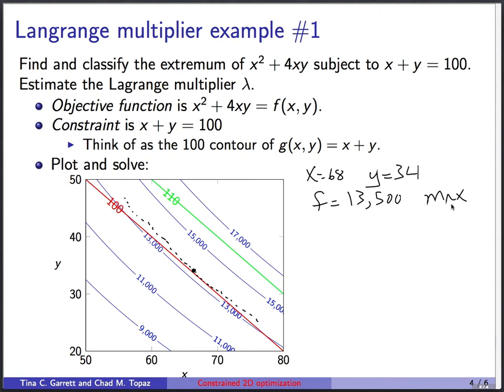For the second part, I want you to estimate the Lagrange multiplier. And we have to remember that the Lagrange multiplier means change in the optimum, optimum value, divided by change in the constraint.